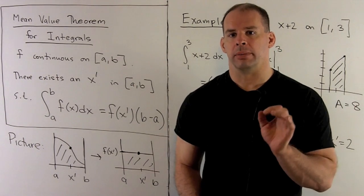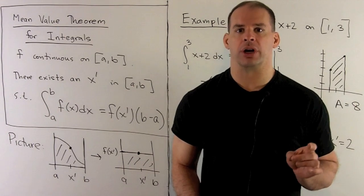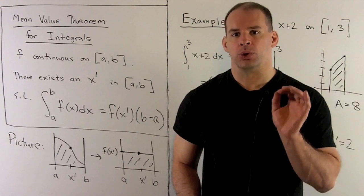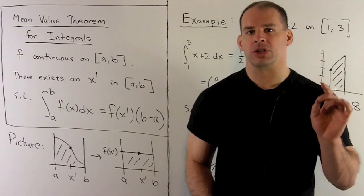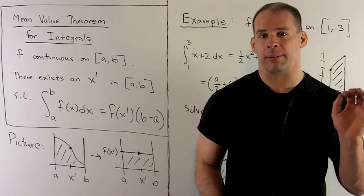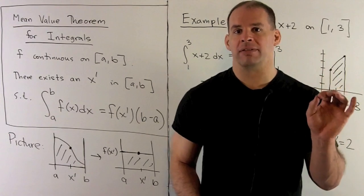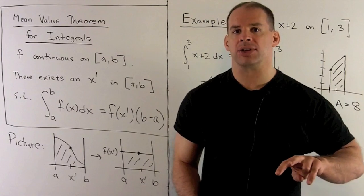Now, for the Mean Value Theorem for Derivatives, the main idea is captured nicely with a picture. So there, our mean value, which we interpret as the slope of a secant line, is equal to the slope of a tangent line for some x in our interval, and that's just our derivative evaluated at x. So the picture there is just two parallel lines.